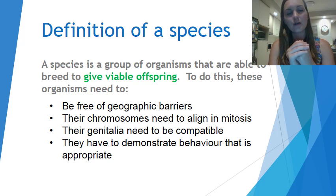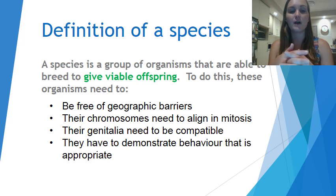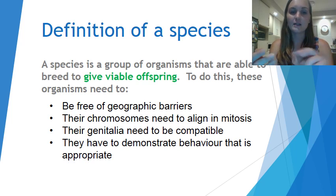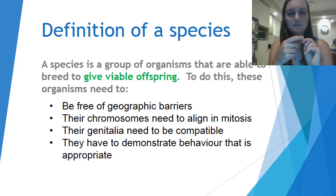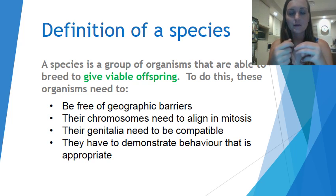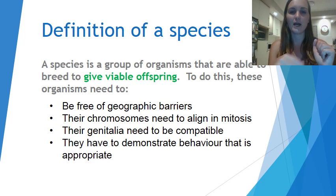In order for a species to exist and be able to breed and give viable offspring, it needs to have no geographic barriers. Its chromosomes need to be able to align in mitosis. Genitalia needs to be compatible to reproduce, and it needs to demonstrate appropriate behavior.